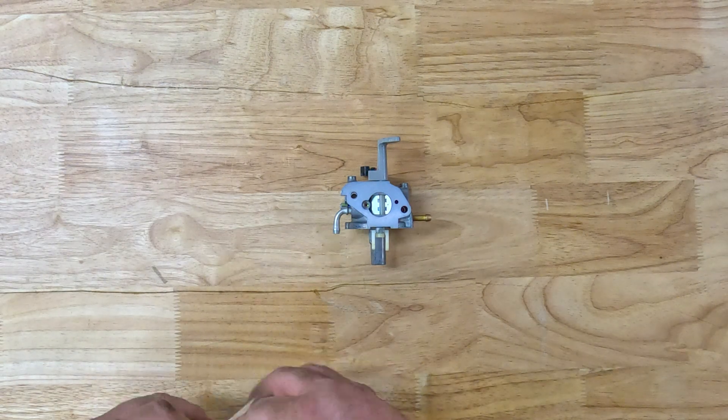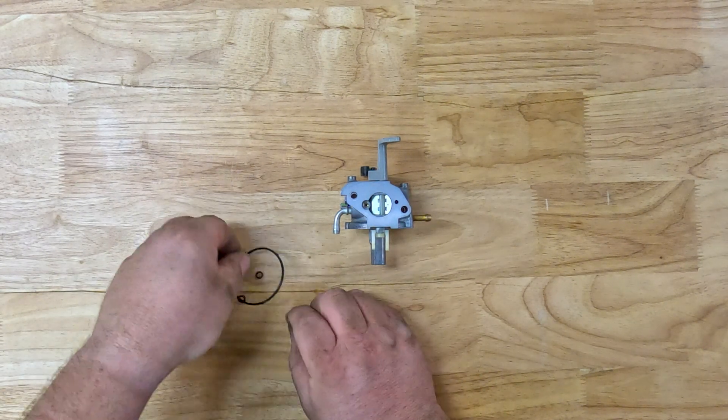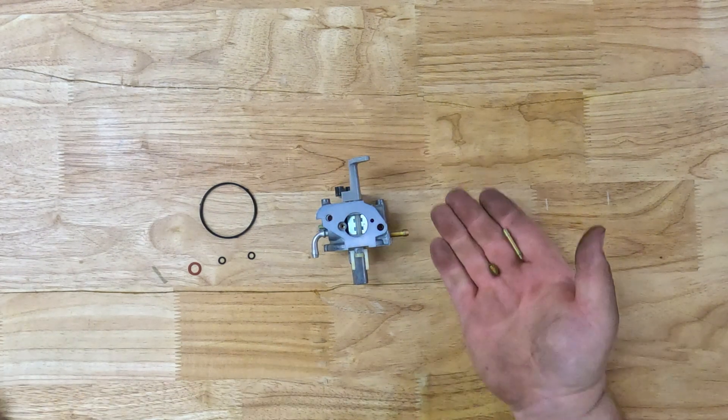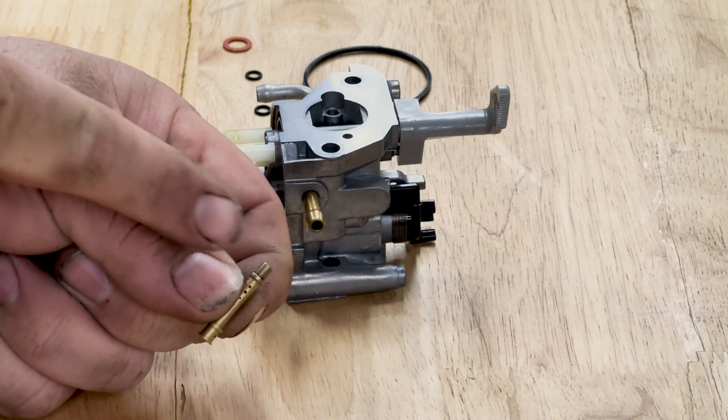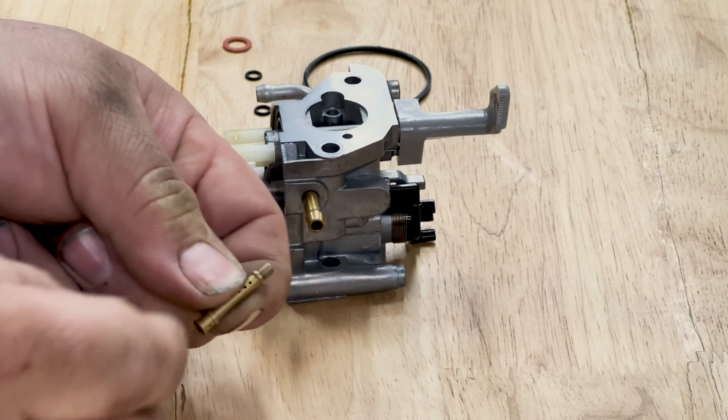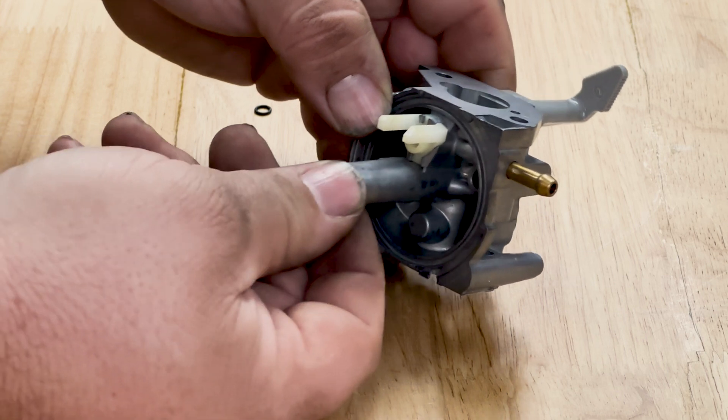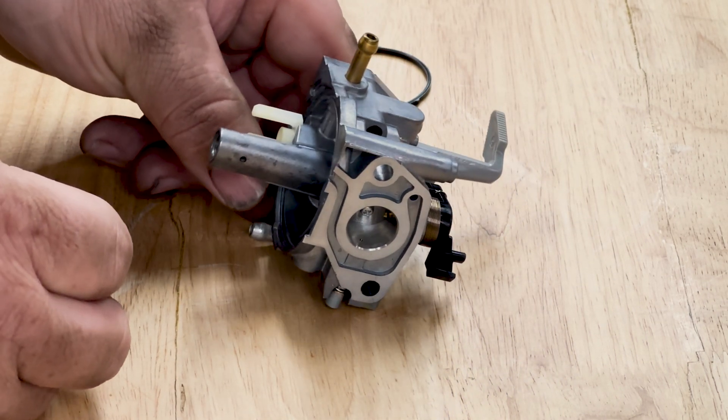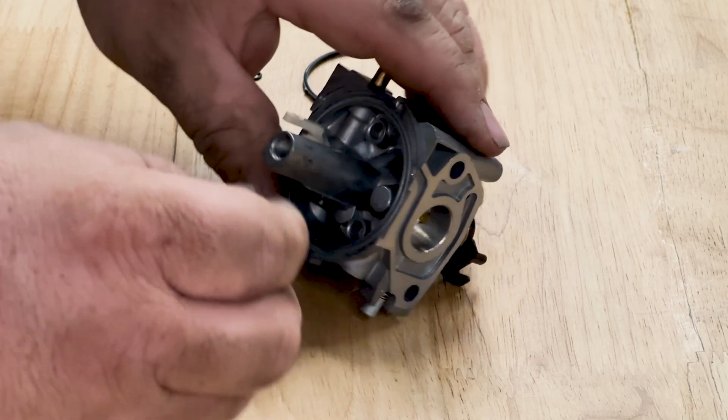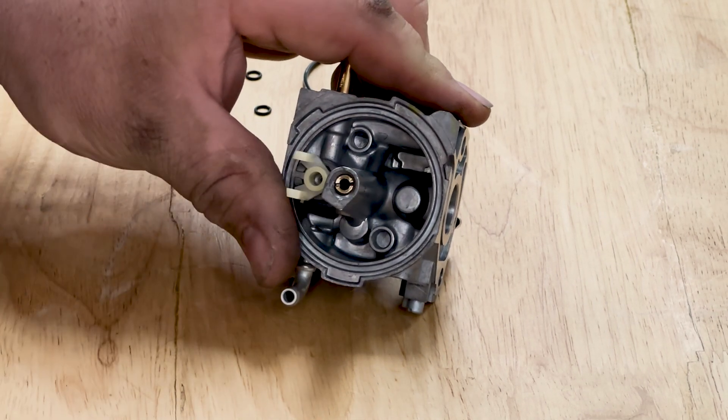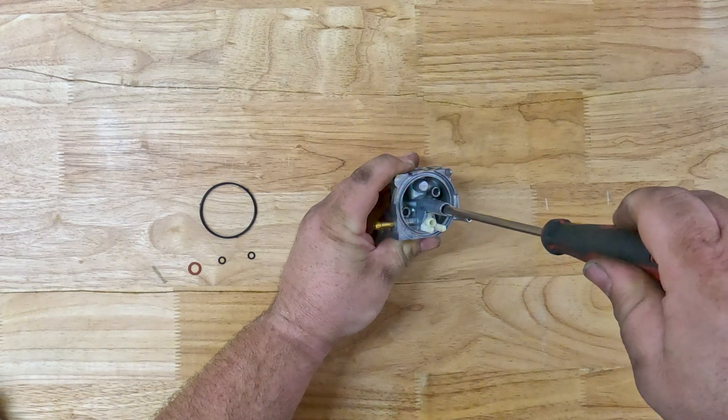Now we grab the service kit. Just empty that one out. Now we'll start the rebuild. The first step is popping the emulsion tube and the jet back in. So, with the emulsion tube, the long part just there at the top goes into the carburetor first. And then with the jet, we've got the little cutouts for the screwdriver. They face the outside. Now grab your flat blade screwdriver and do that up. It doesn't need to go too tight. That's it.